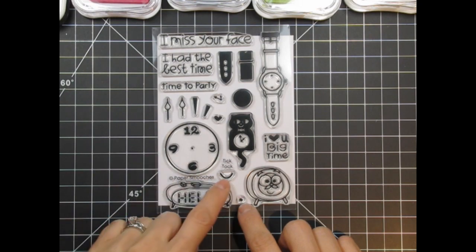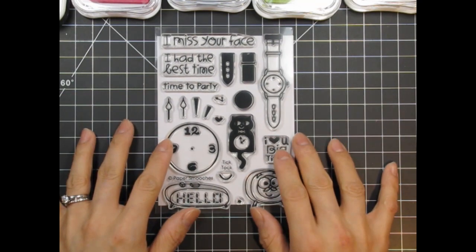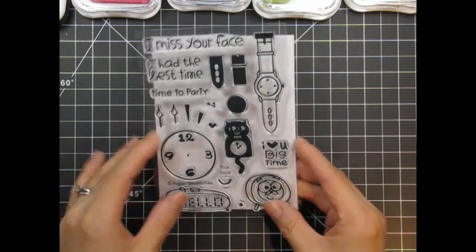Lastly, there's a tiny eye with lashes and a mouth to make your own faces. So that's it, and you can start to imagine how you'll use these fun stamps.